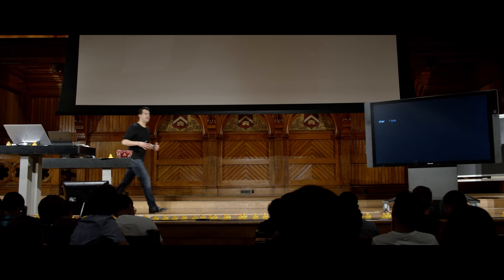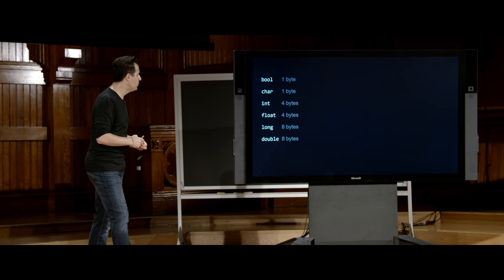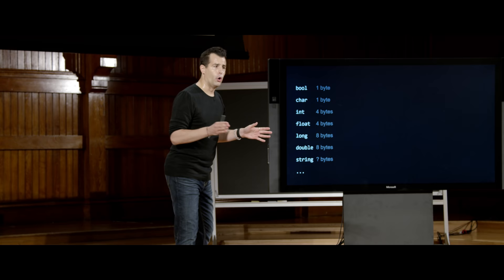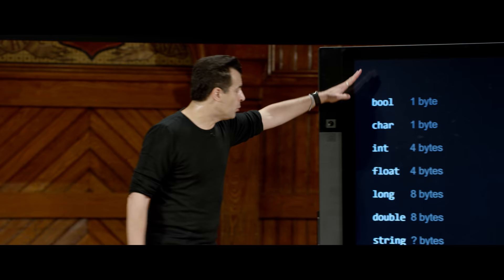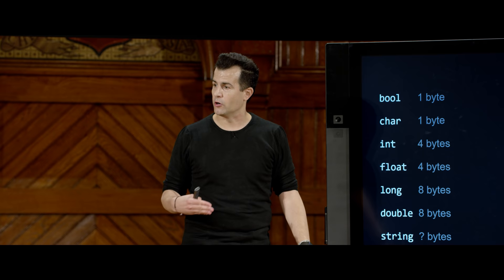Now we introduce arrays. In C, we have choices of data types: chars, ints, floats, longs, doubles, bool, string, and others. On CS50 IDE and most modern Macs and PCs, each data type takes up a specific amount of space: a char is 1 byte, an int is 4 bytes (32 bits), a long or double is 8 bytes (64 bits).